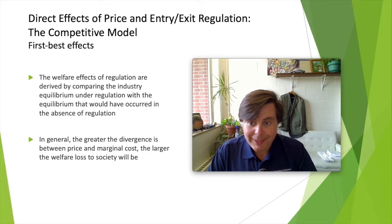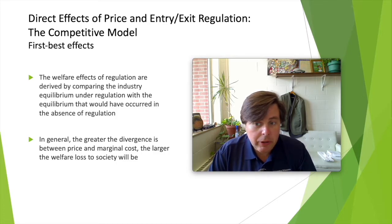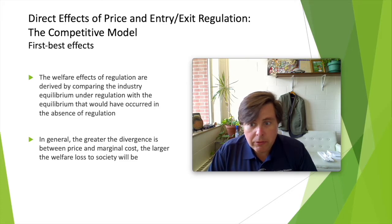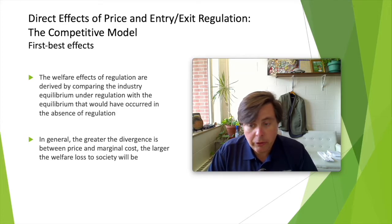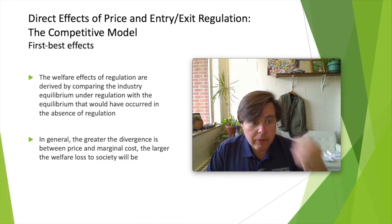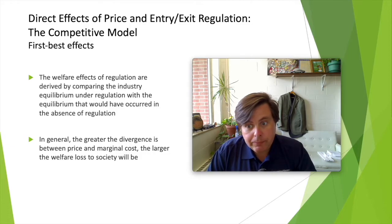To get started, let's quickly review some things associated with perfect competition. Competitive industries generally produce at the minimum of their average costs, which generally corresponds to their marginal costs. They generally face flat-ish demand curves — an individual firm can't affect price. For example, an individual gas station can't raise prices because people would just go next door, and they can't lower them because they'd lose money.